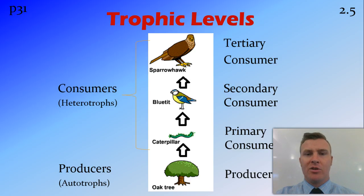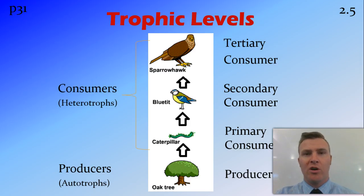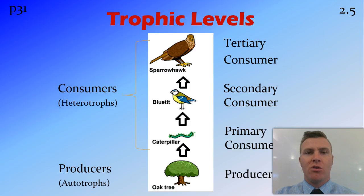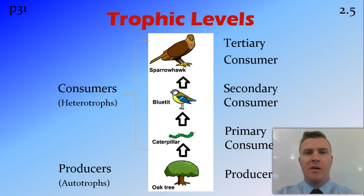We have different trophic levels shown in our food chain, starting with the producer at the bottom. Producers can also be referred to as autotrophs. Both 'trophic levels' and 'autotrophs' come from the Greek word 'trophos,' meaning pertaining to food, so autotrophs means self-producing food. The producers are eaten by primary consumers, sometimes written as first order consumers.